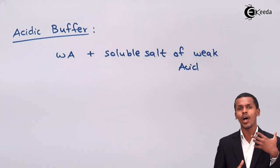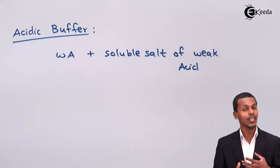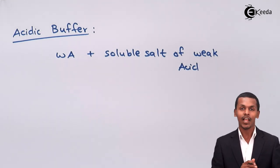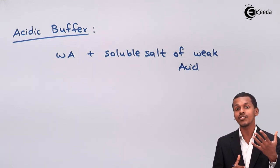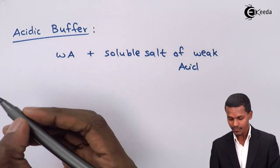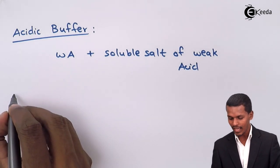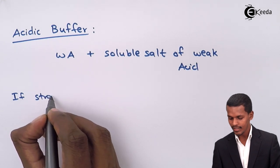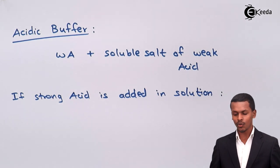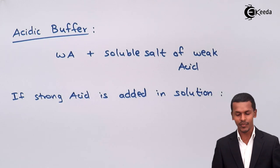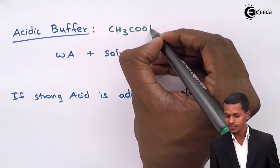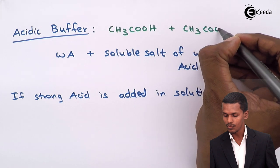Now, how can it resist the change in pH even when we add a particular amount of strong acid or a strong base? The common example of an acidic buffer is CH3COOH (acetic acid) along with CH3COONa (sodium acetate).